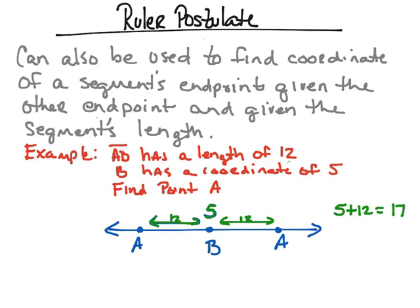What if we go in the opposite direction — 12 units to the left? Starting at 5 and subtracting 12 gives us 5 minus 12, which equals negative 7. So point A could also be at negative 7. We get both answers because we know point B is at coordinate 5 and the length is 12, so we can either add or subtract 12 from B's coordinate.